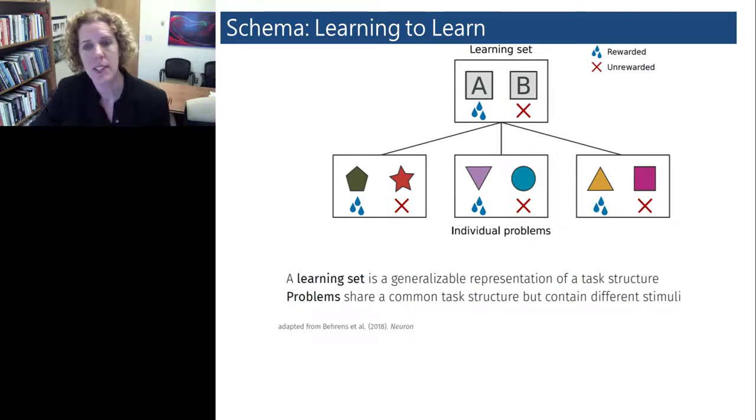Importantly, we're interested in the nature of that mapping function, which could then be leveraged in order to make inferences about stimuli when they're observed for the first time. That is, in order to be able to have rapid new learning.